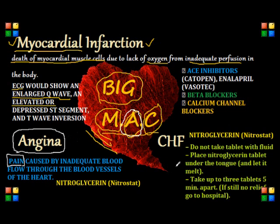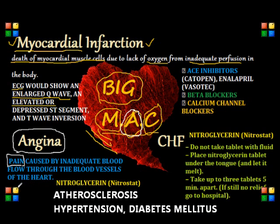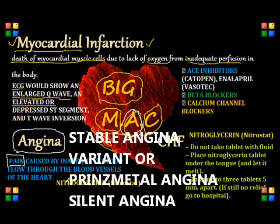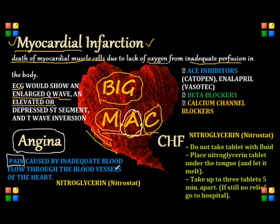Compared to MI, the pain from angina may be relieved by rest. Risk factors or causes for angina usually include previous atherosclerosis, hypertension, or diabetes mellitus. There are different types of angina. Stable angina occurs with exertion and is relieved by rest, and it doesn't increase in frequency or severity. Variant or Prinzmetal Angina usually increases in severity, especially with exertion.